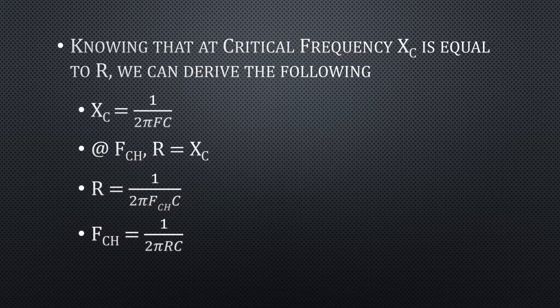Knowing that at critical frequency X_C is equal to R, we can derive the following: X_C equals 1 over 2πFC. At F_CH, R equals X_C. Therefore R equals 1 over 2πF_CH×C, and F_CH equals 1 over 2πRC.